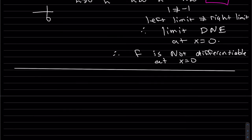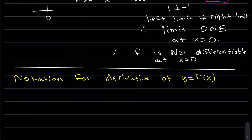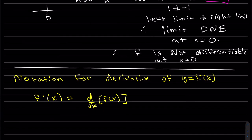Now let's write out all the notations for the derivative — it's really important to know all of them, especially if you go on to differential equations. Our first notation is f prime of x. This equals d/dx of f(x), which equals f prime of x.